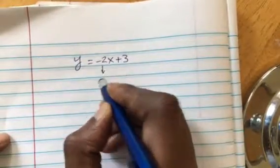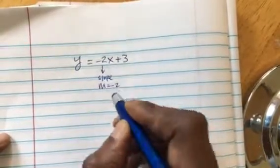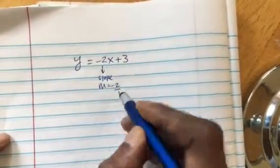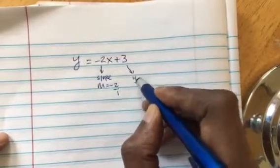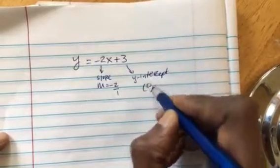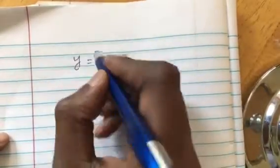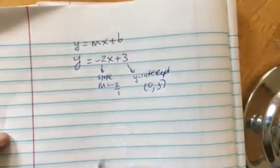slope is M, which is negative 2, or you can write it as negative 2 over 1. And the y-intercept is (0, 3). So this equation is in the form of y equals mx plus b, the slope-intercept form.